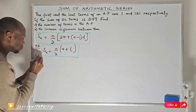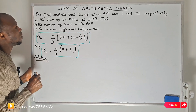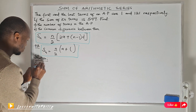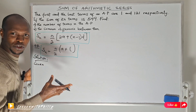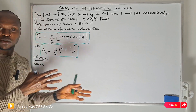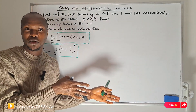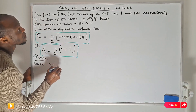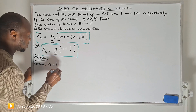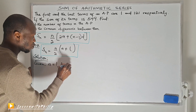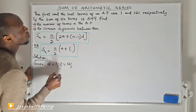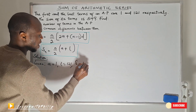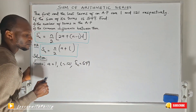Now let's look at the solution. I like to start from what I'm given so I know what I'm asked to find. From the question, we are given the first term to be 1, the last term to be 121, and the sum of the terms to be 549.